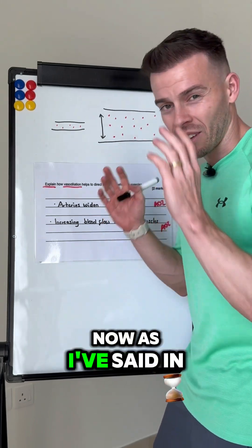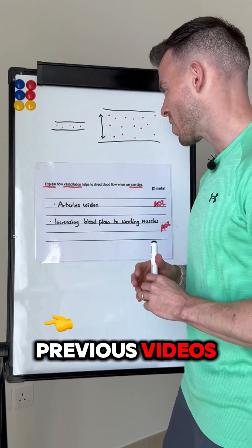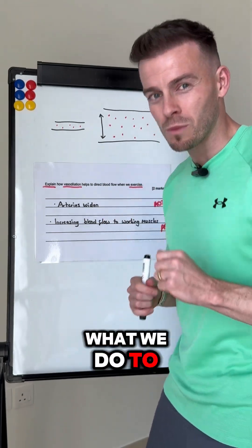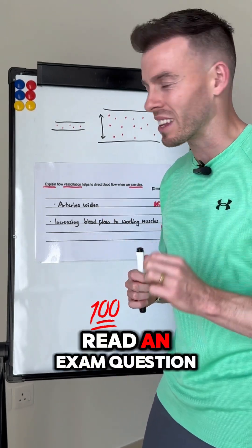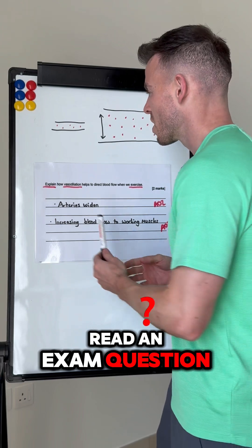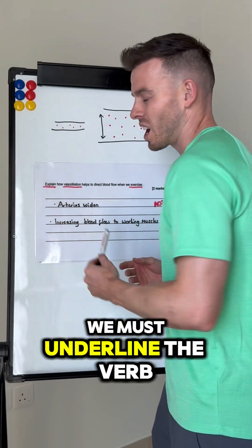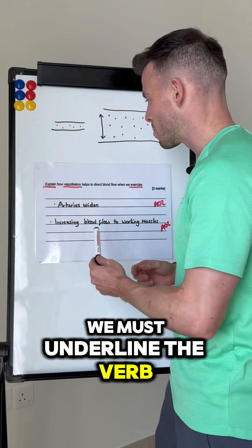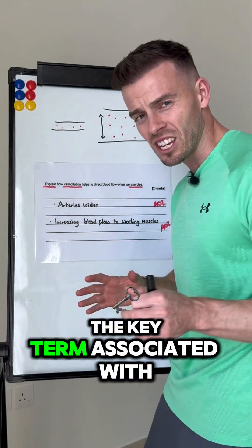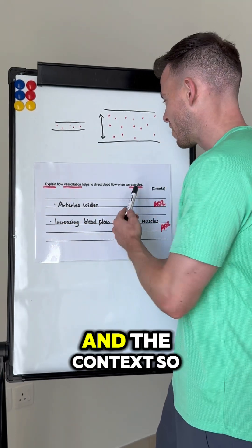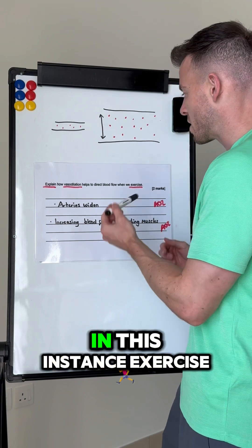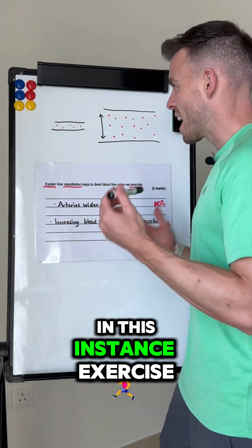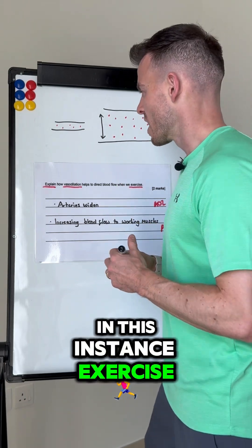As I've said in previous videos, what we do to begin with when we read an exam question: we must underline the verb, the key term associated with our subject, and the context. So in this instance, the context is exercise.